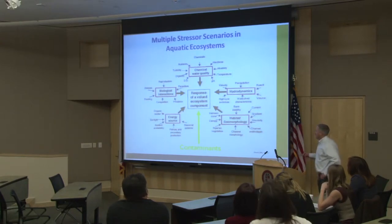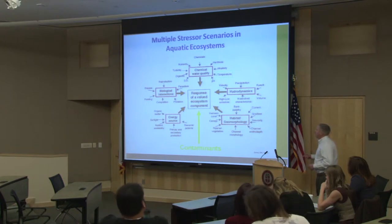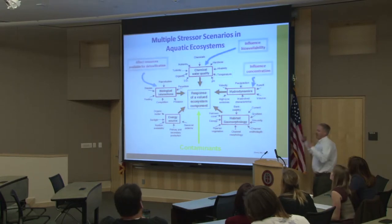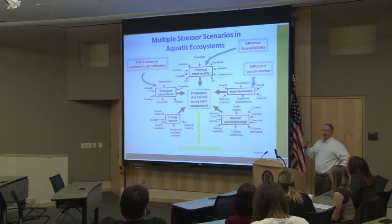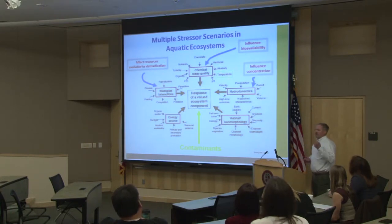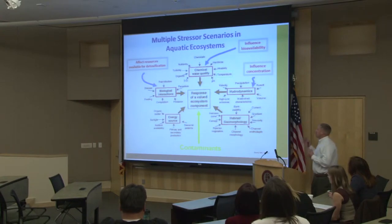We study contaminants and how they affect a valued ecosystem component — something in the ecosystem that we put a value on. That's the framework of ecotoxicology. In reality, in the environment around that are all kinds of other stressors, many of which modify contaminant toxicity and bioavailability. Things like temperature are directly related to climate change, and these variables can interact with contaminants, so we essentially have a multi-stressor system as a default.